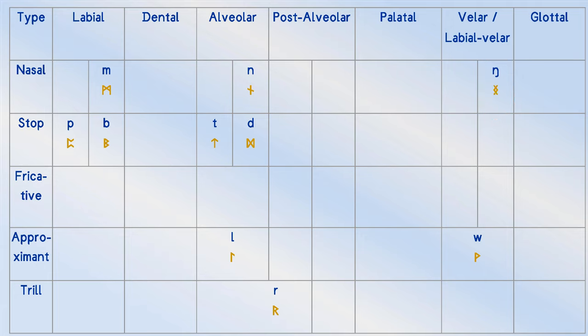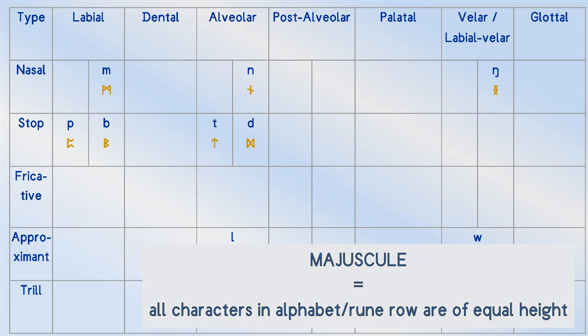As you will see going on, one of the key differences between Elder Futhark and Anglo-Frisian Futhark is that the latter is a majuscule script.